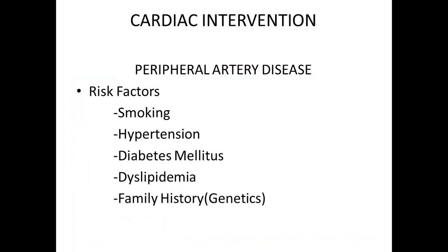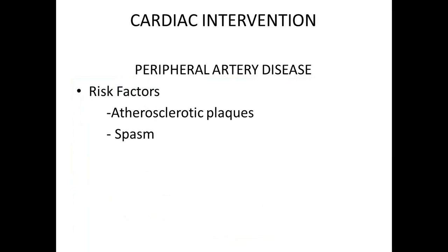The risk factors — conditions that predispose one to peripheral arterial disease — are the same as those for a heart attack: smoking, hypertension, diabetes mellitus, dyslipidemia, and family history. Family history suggests a genetic component. These are common risk factors for both peripheral arterial disease and coronary artery disease. These risk factors give rise to what we call the atherosclerotic plaque. In a small percentage of patients you'll have vascular spasm, but 99% present with atherosclerotic plaque.